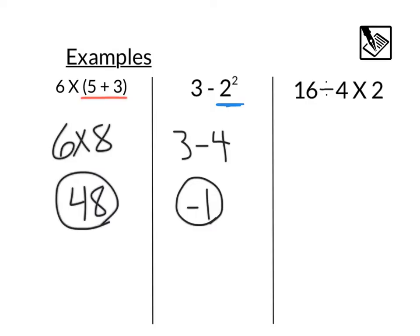Last problem, 16 divided by 4 times 2. I don't see any parentheses, I don't see any exponents, I have division and multiplication. Since I have both, we're going to move from left to right, that means I'm going to start right here with 16 divided by 4, that's going to give me a 4. Then I still have this times 2, and 4 times 2 is 8, and that's going to be our answer.